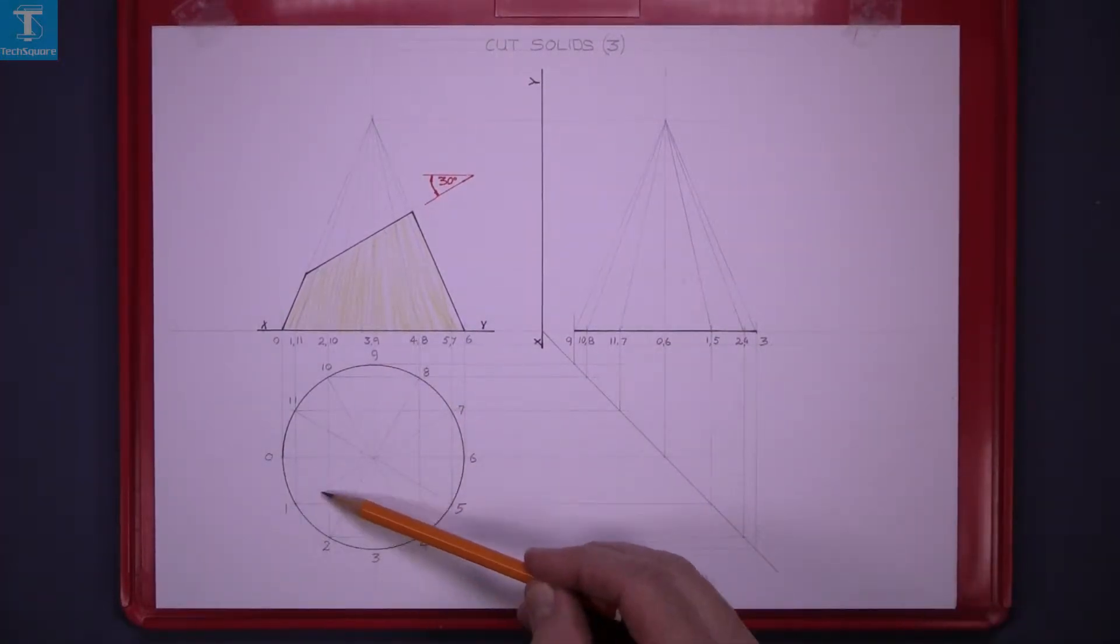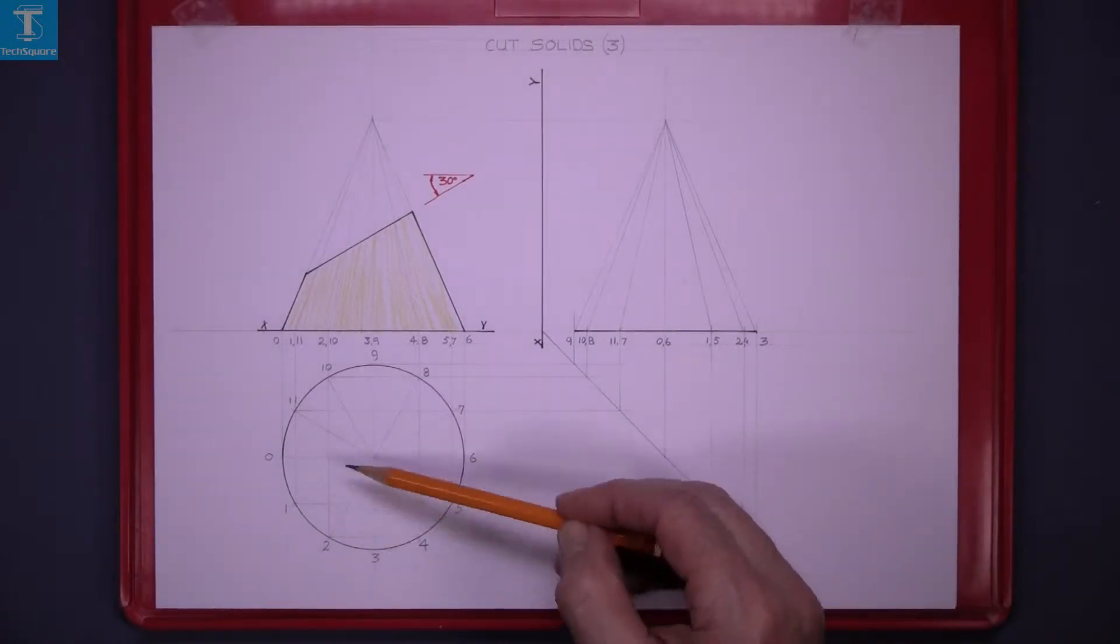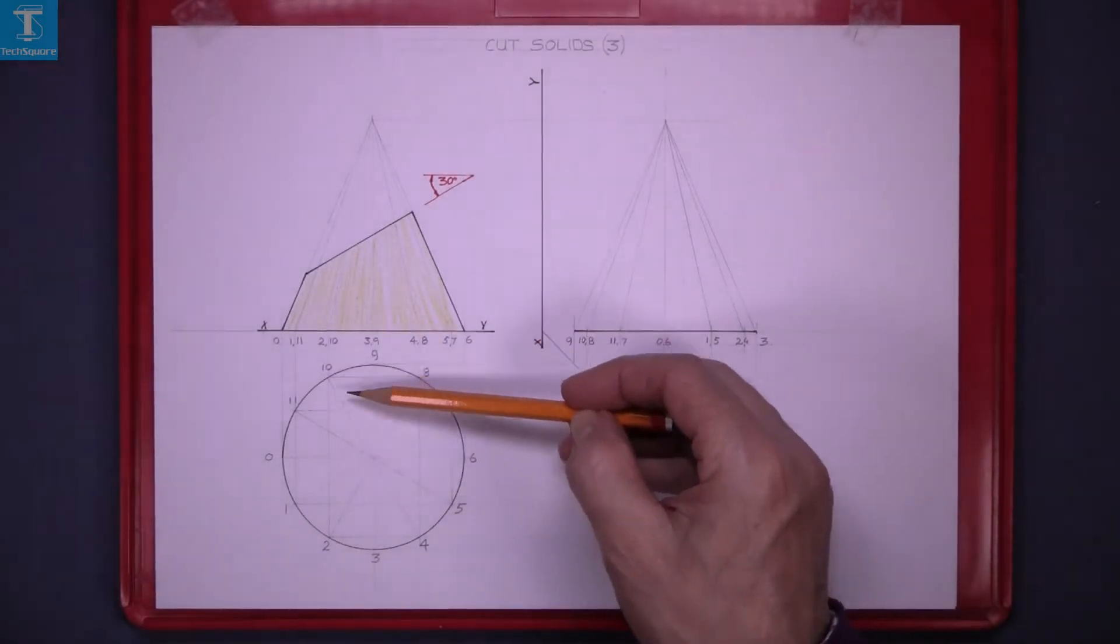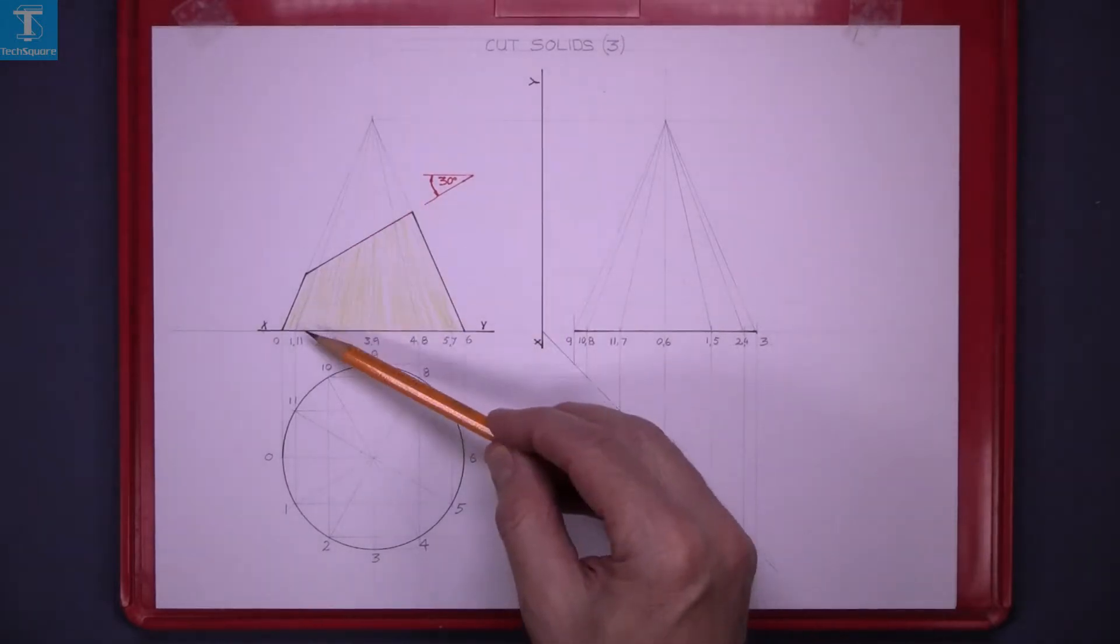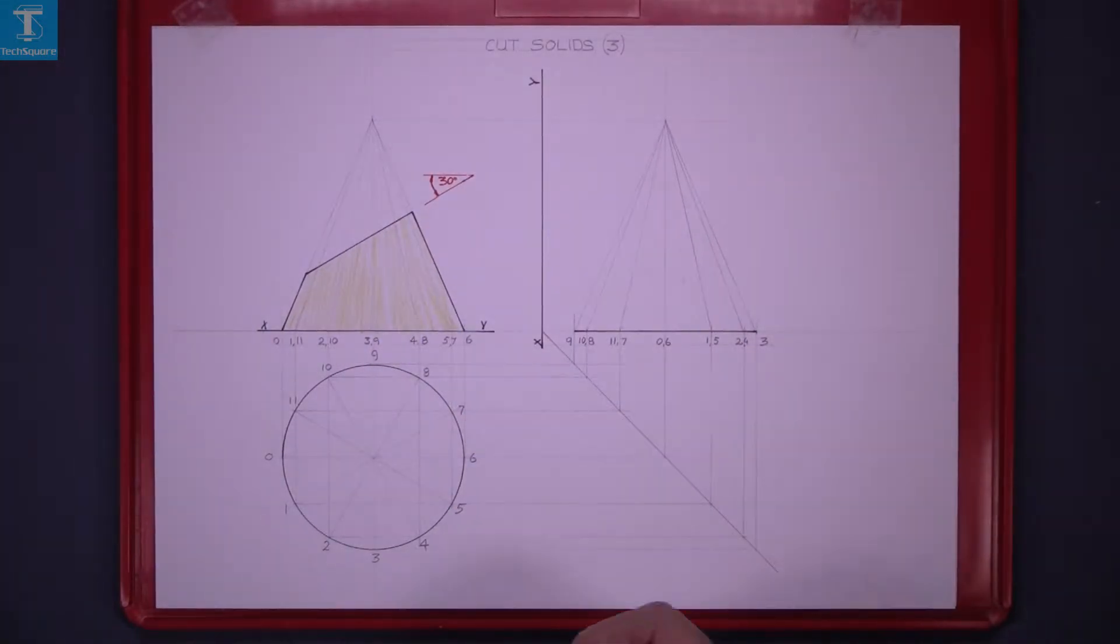What I've done here is I've divided the plan into 12 equal parts with the 30 degree set square and projected them to the elevation and got the lines on the surface in the elevation.